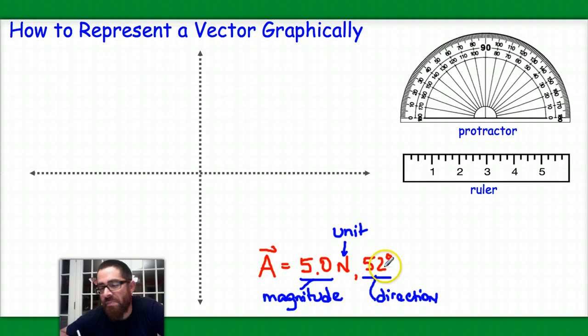A scalar is a quantity that has magnitude only. So let's take a look at our coordinate axis. I've got 0 degrees, 90 degrees up here at the positive y axis, 180 degrees over here at the negative x axis, 270 degrees on the negative y, and then of course back to 360 degrees again.